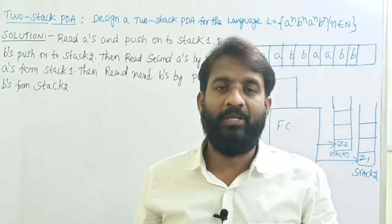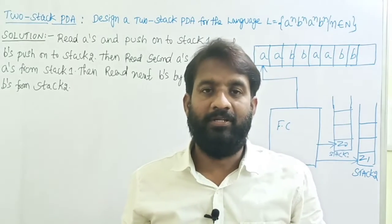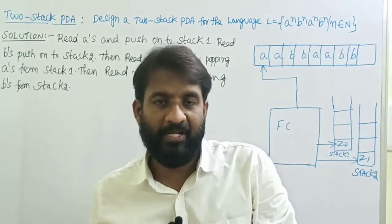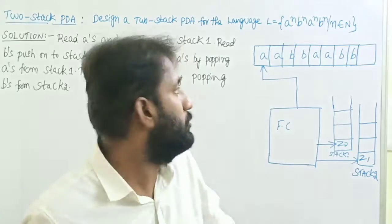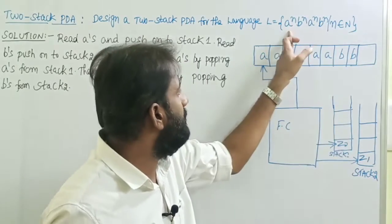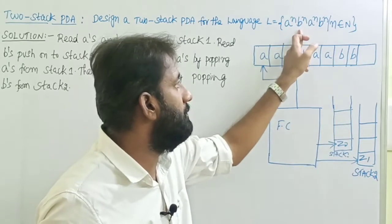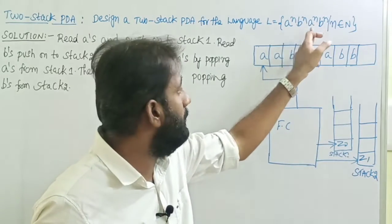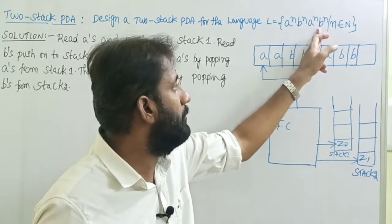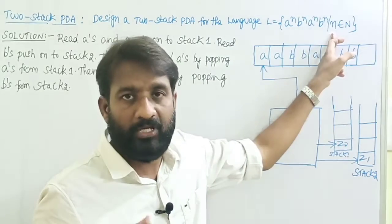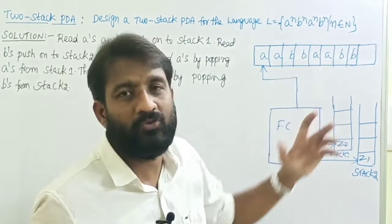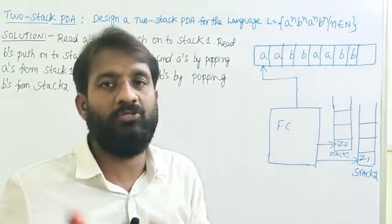Welcome back. Today's topic is: design a two-stack PDA for the language L equals a^n b^n a^n b^n, such that n belongs to the natural numbers — n equals 1, 2, 3, 4, and so on.